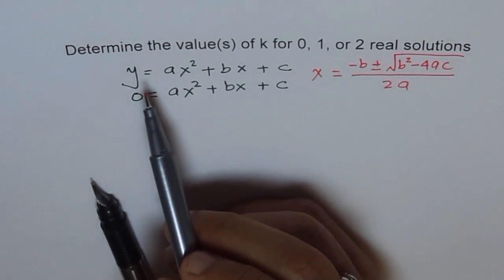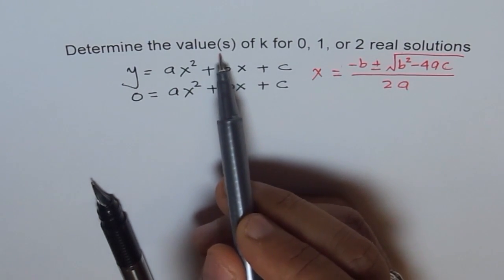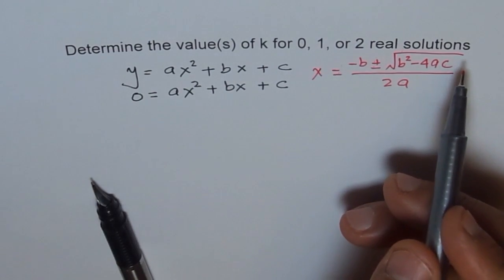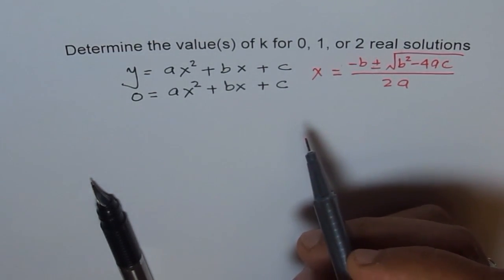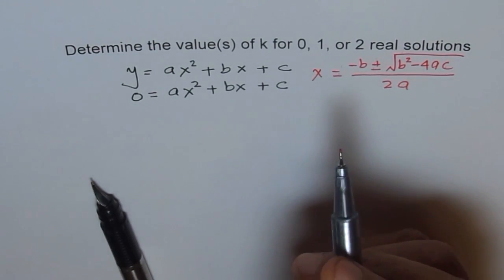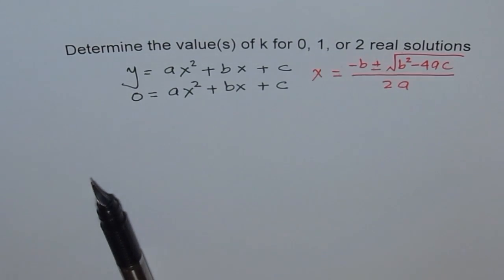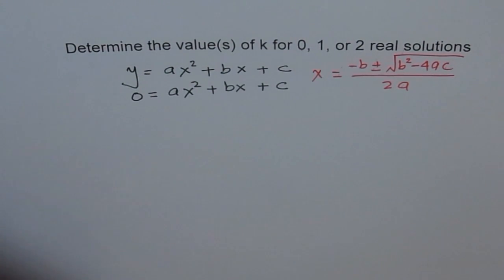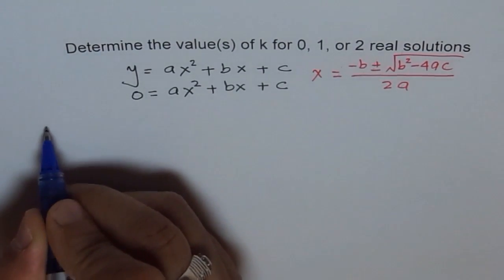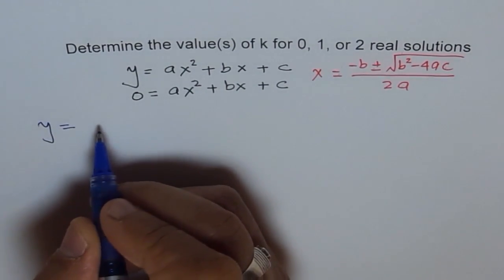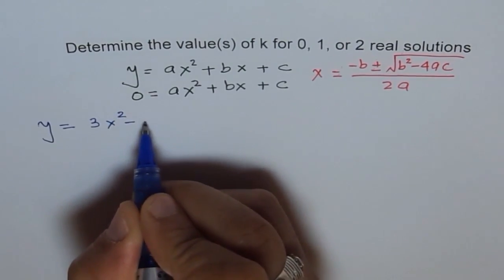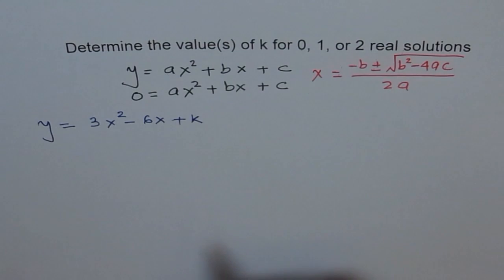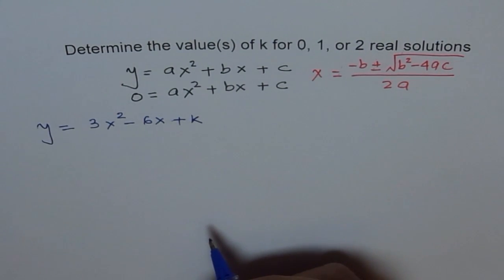The question we are dealing with today is: determine the values of k for 0, 1, or two real solutions. I will take some quadratic equations and find out what values of k will give us these kinds of solutions. Let me write down some equations — let's take the example of y equals 3x squared minus 6x plus k.